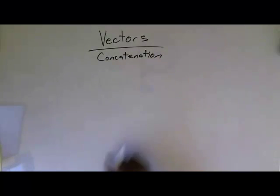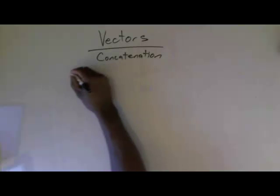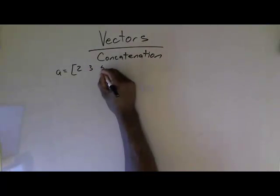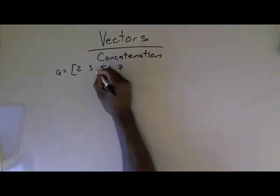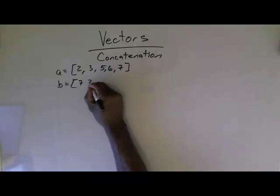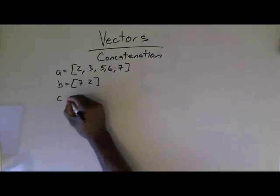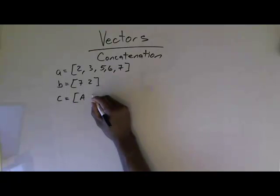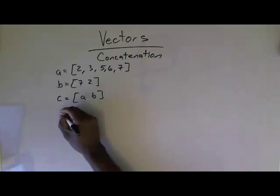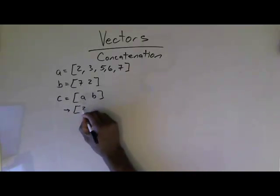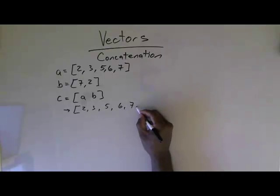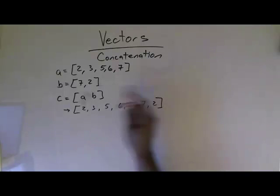Concatenation is basically how do you stick vectors together. If I had vector A equals 2, 3, 5, 6, 7, and vector B equals 7, 2, then if I do C equals the vector of A concatenated with B, then C is going to wind up being 2, 3, 5, 6, 7, 7, 2. Basically, I just took these two vectors and stuck them together.